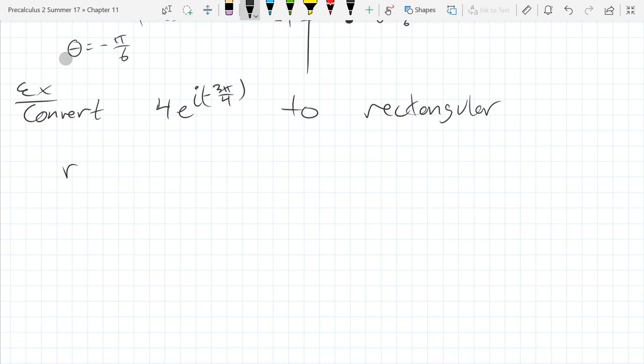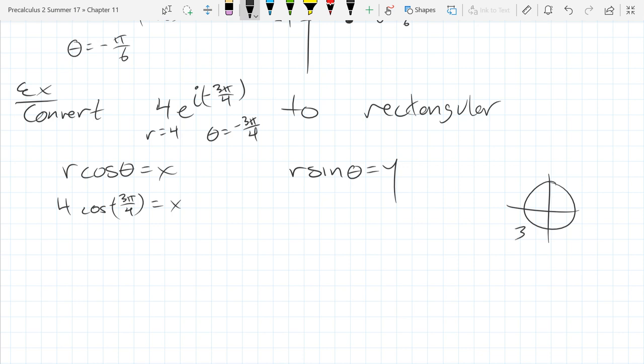So we have r cos theta equals x, r sine theta equals y. We have our radius is 4, theta negative 3 pi over 4. So we got 4 cos negative 3 pi over 4 equals x. So we're in quadrant 3. Everybody's negative there. So that's negative 1 over square root of 2 is x. I'm okay with this number the way it is. You can rationalize out of there if you want to, but it's good enough for me.